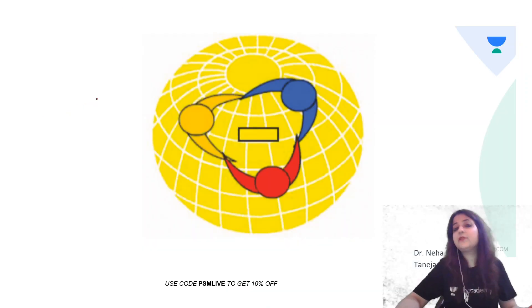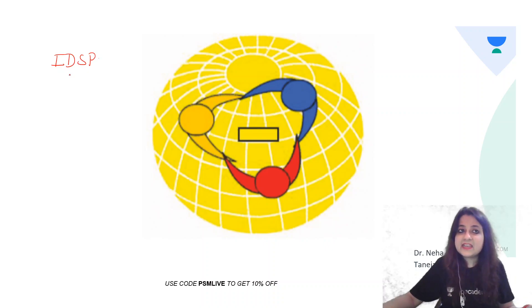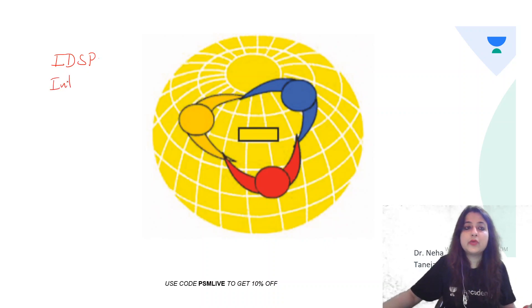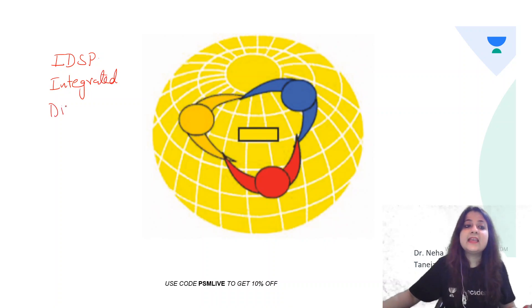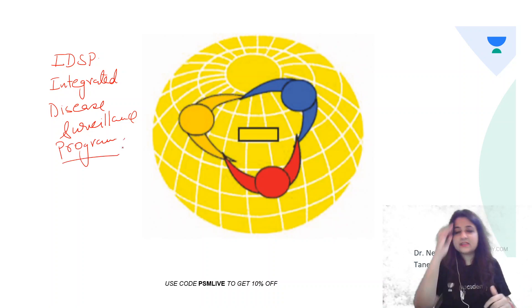So let's see the first image. This is the image of IDSP — Integrated Disease Surveillance Program. This comes up a lot of times in our examinations. Now under this, I'm going to tell you some of the questions that are asked. You are asked: what are the reporting mechanisms under IDSP?